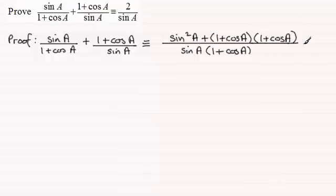So it's a question now of expanding the brackets here. So we've got sin squared A for the first term and then expanding the bracket, 1 times 1 is 1. And then we've got 1 times cos A is cos A plus another cos A. So it's going to be plus 2 cos A. And then we've got cos A times another cos A, which is going to be cos squared A.